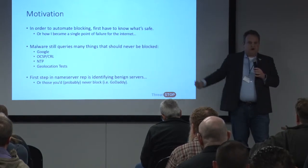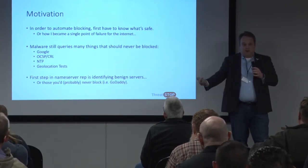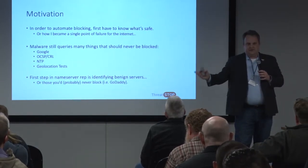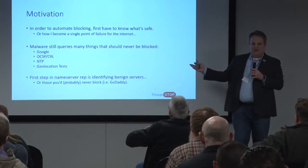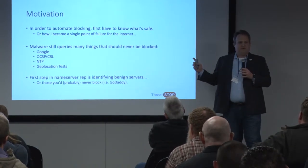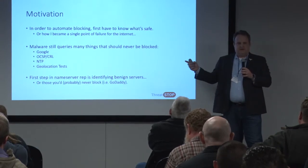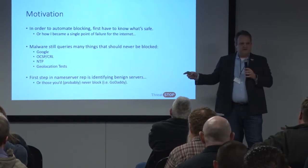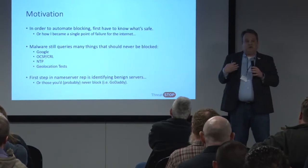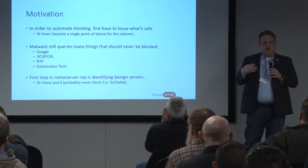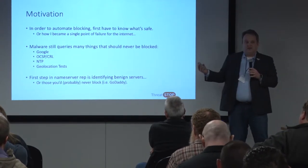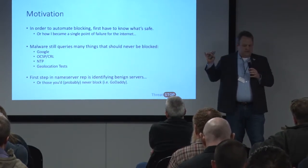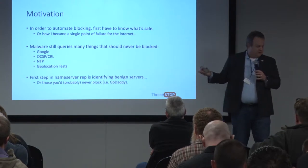Malware and automatic processing queries lots of different things that you don't want to block. You run a sandbox report, there'll be geolocation checks, it might do a Google search. I have OCSP on there as an example, because two or three months ago, MSISAC distributed one of their automated threat reports that listed OCSP.amazontrust.com, which we internally weren't whitelisting at ThreatStop, and it caused a pretty high number of false positives, because you can imagine how many things query that. There are lots of things you'll see in artifacts of sandbox runs you never want to block.